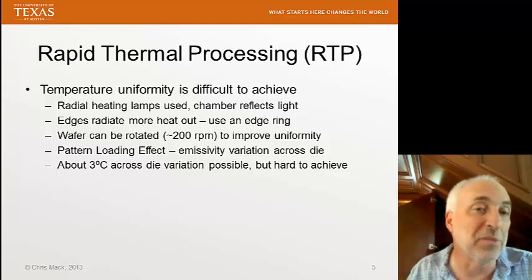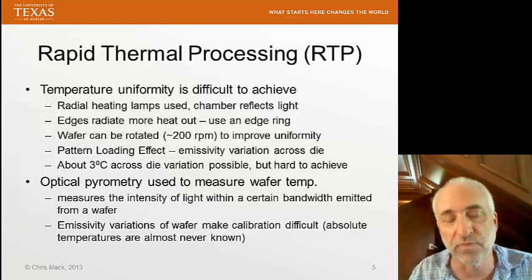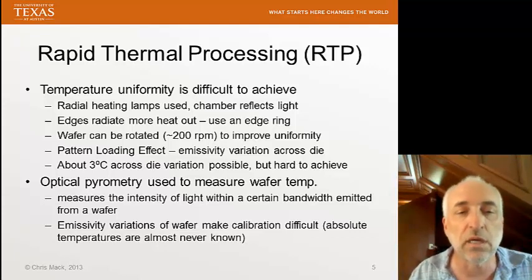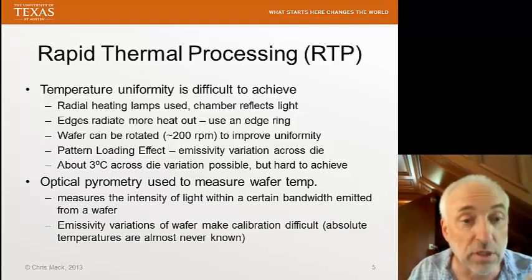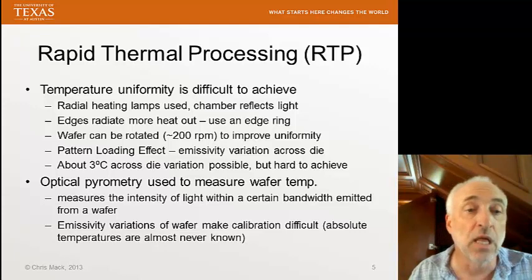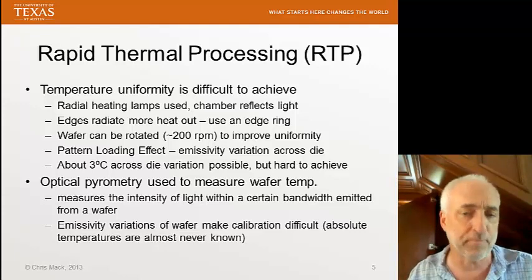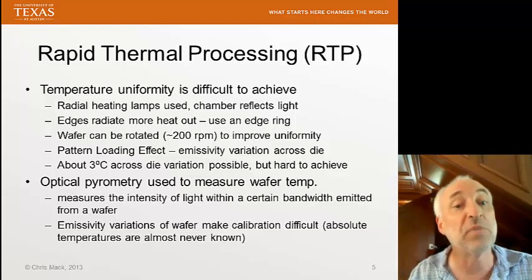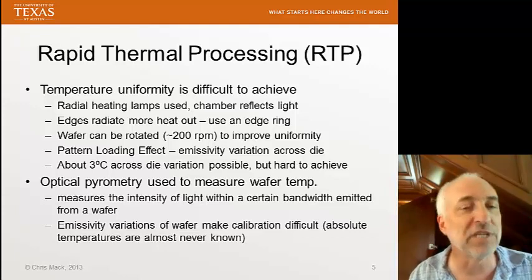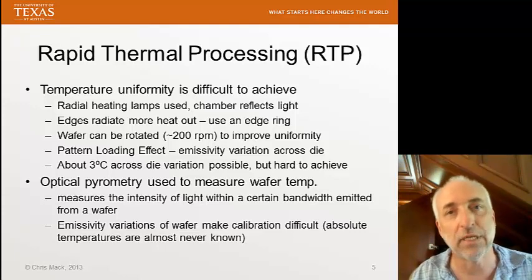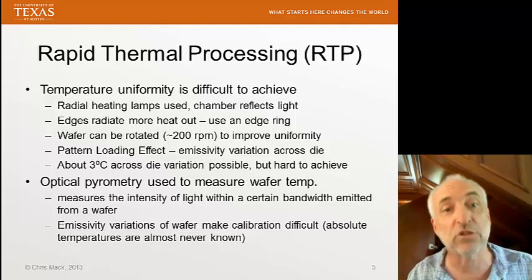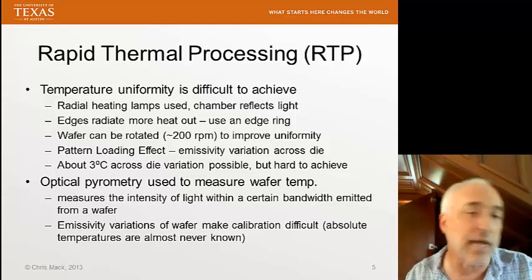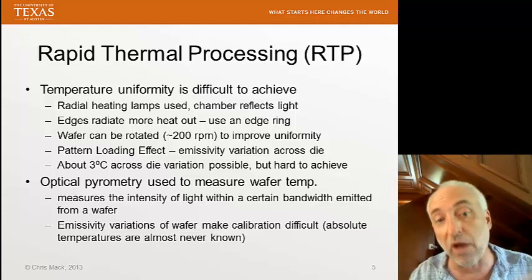Intrinsic to controlling temperature is the ability to measure temperature quickly. The preferred method is optical pyrometry — we measure the intensity of light being emitted from the wafer. It's like using a camera to look at a red-hot piece of metal: the color of the light coming off the wafer is a measure of how hot it is. By measuring the intensity of light as a function of wavelength, we can get information about how hot the wafer is.